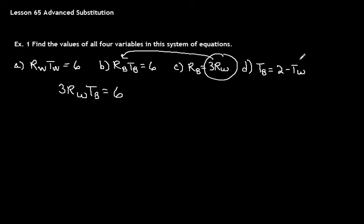TB equals 6. Now, TB is equal to 2 minus TW. So I'm going to take my TB and I'm going to put in 2 minus TW. So we get 3RW, TB is the same as 2 minus TW, and that equals 6.